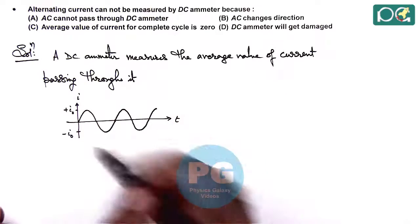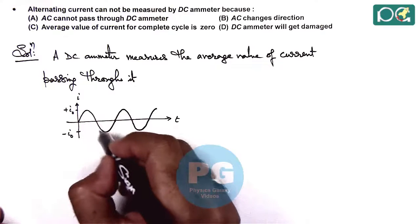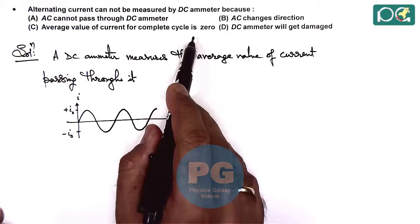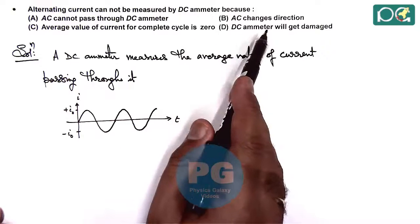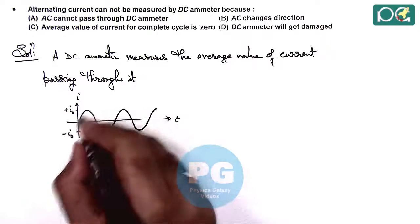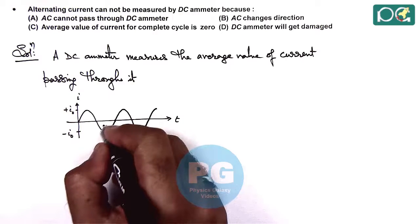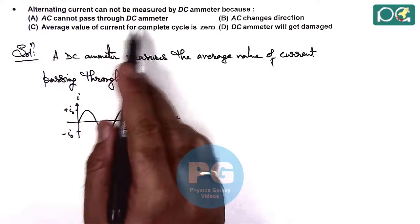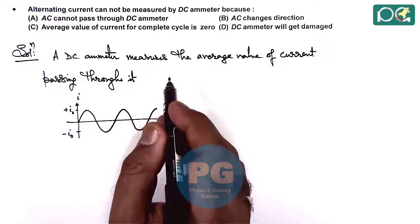Because for an ideal AC as average value is zero, option C is more appropriate because if there is an AC in which the direction is changing but upper and lower half cycles are of different duration, in that case DC ammeter will not give us zero because average value is not zero.